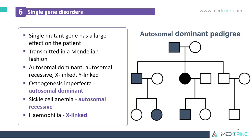Single-gene disorders occur where a single mutant gene has a large effect on the patient. Most of these are transmitted in a Mendelian fashion. We have autosomal dominant, autosomal recessive, X-linked, and Y-linked disorders. An example of an autosomal dominant disorder is Osteogenesis Imperfecta, an autosomal recessive condition is Sickle Cell Anaemia, and an X-linked condition is Haemophilia. On the right side of the slide, we have an autosomal dominant pedigree that highlights the probabilities of developing these single-gene disorders.